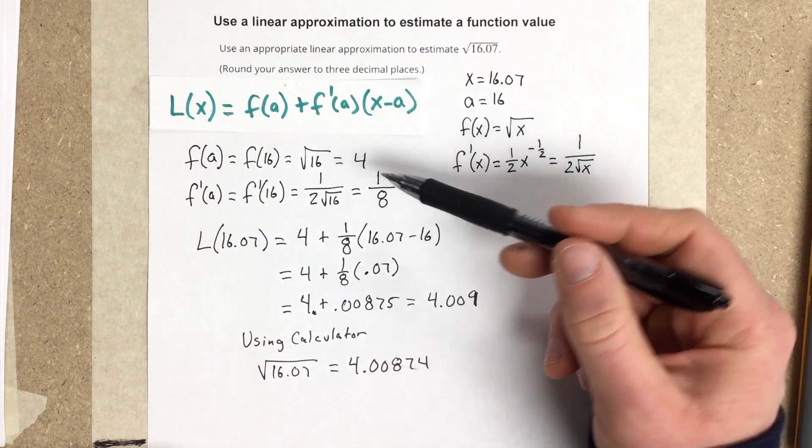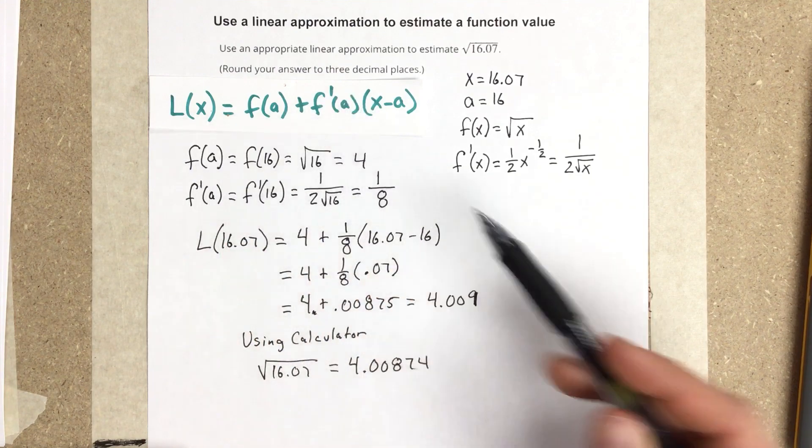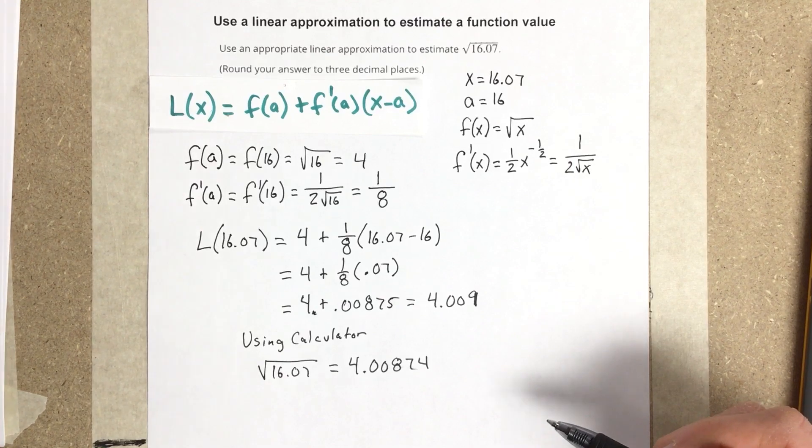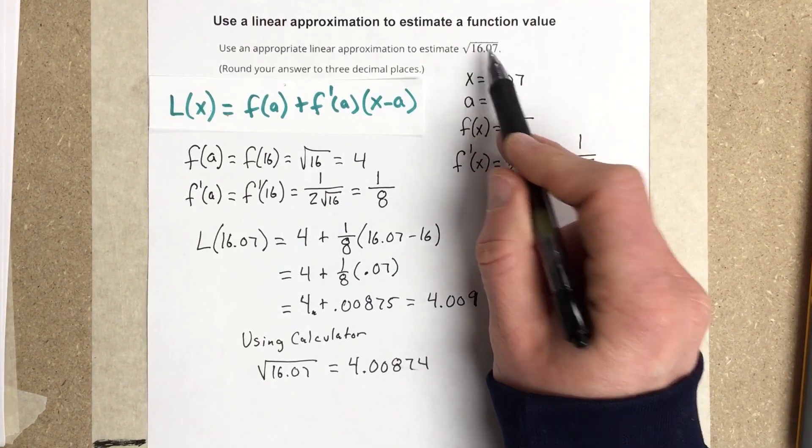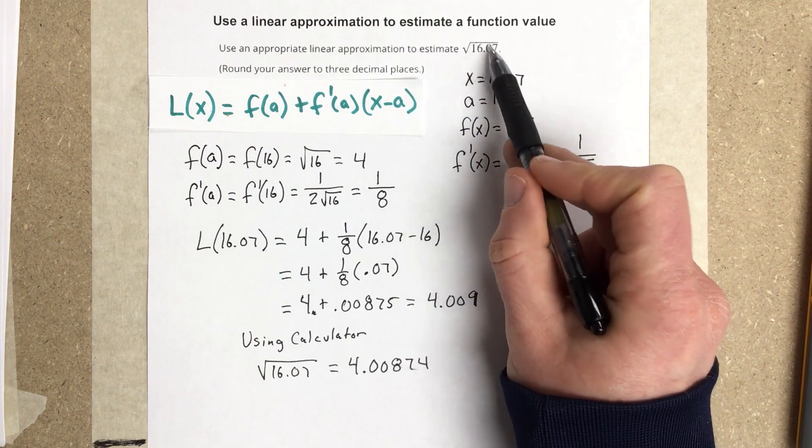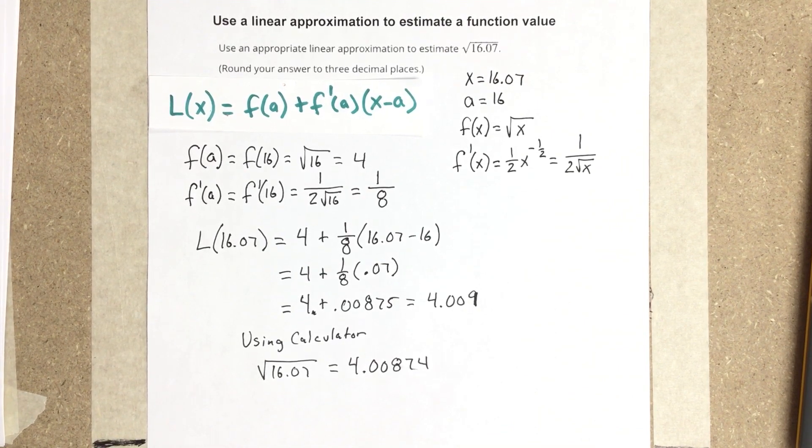So that tells you that the tangent line, which is this linearization equation, the tangent line does a good job of approximating the values that are really close to the x value you have here. So as long as you pick an a value that's close to this, you can use the tangent line to figure out a good approximation of numbers right around there.